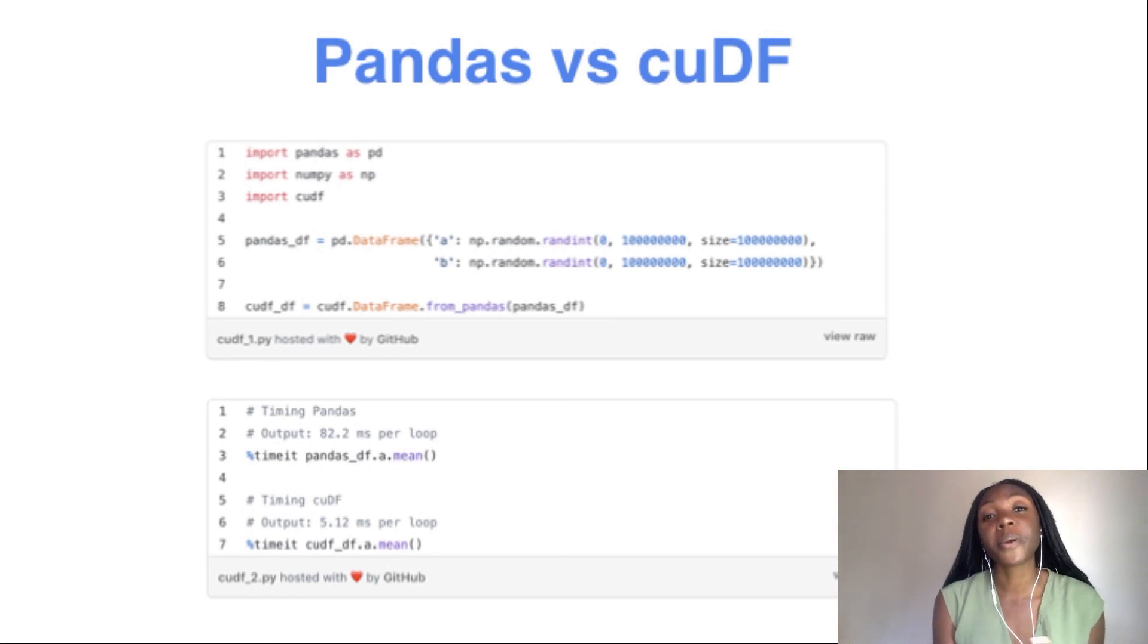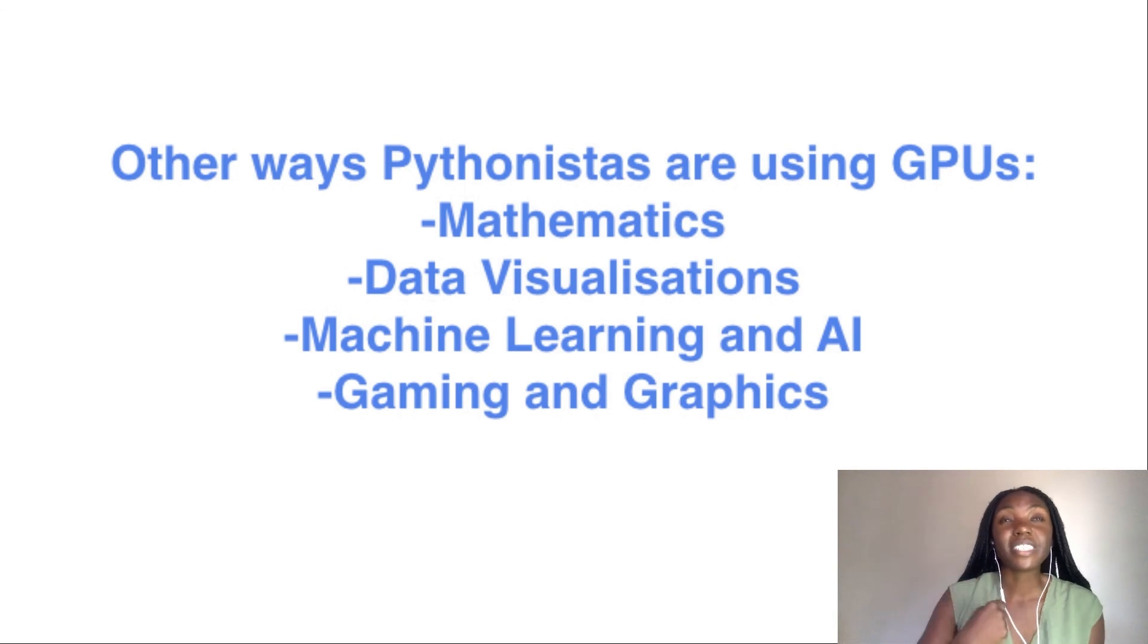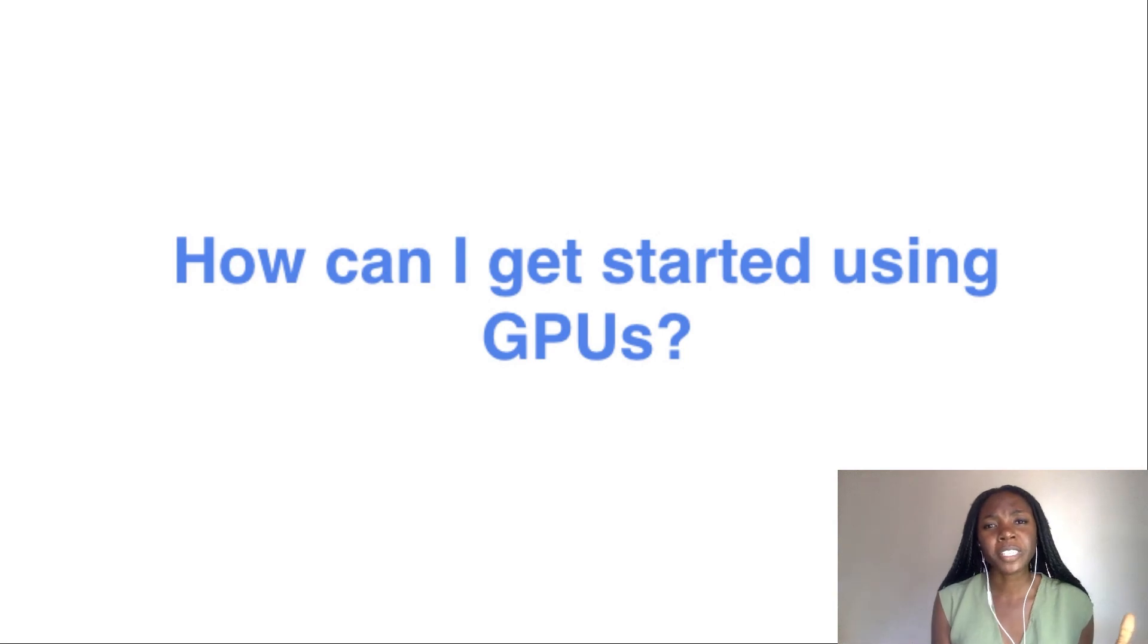But cuDF is not the only way that Pythonistas are using or can use GPUs. There are lots of fields where people using Python can get speed ups in their Python code. One of those fields is mathematics. We have data visualization, machine learning and AI, gaming and graphics, just lots of ways that Pythonistas can utilize GPUs to get speed ups. You might be watching this and thinking to yourself, Marlene, I can't afford a GPU, or I don't know where to get a GPU. You can definitely Google it, but there are some great resources online. And right now I would say GPUs are quite accessible online. And in some cases you can actually get them for free or use them at a really good sort of cost rate.